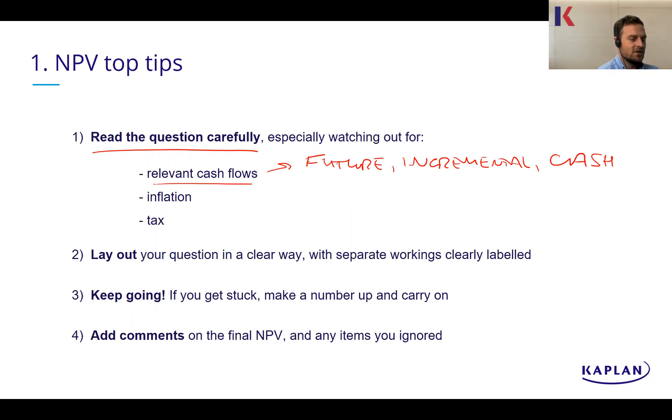Now, I've actually done a separate Kaplan Masterclass on relevant cash flows. But the key thing is that they need to be in the future, they need to be incremental, and they need to be cash. So future, incremental and cash for them to be considered relevant. Now, often what they'll do in the bigger NPVs is they'll throw in things like some market research that we paid for last year. And that's in the past, that's what we call a sunk cost. So you need to ignore that. And then you need to state why you've ignored it. We then need to think about inflation as well, and also tax, thinking about your capital allowances or tax allowable depreciation.